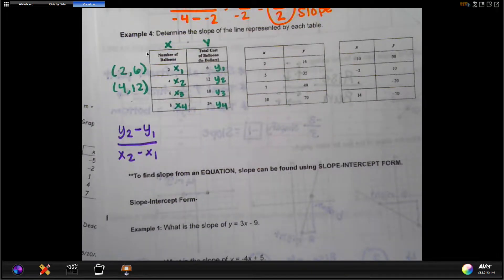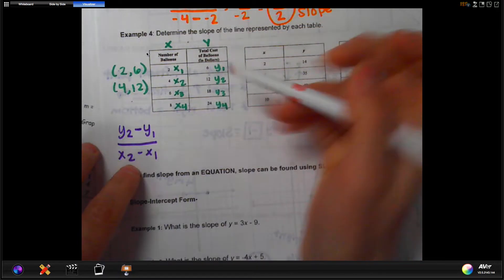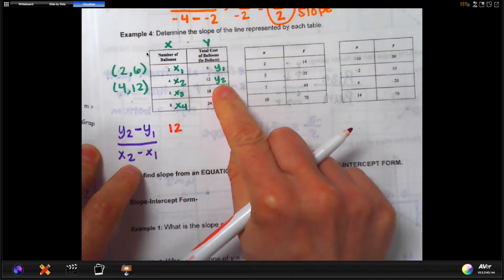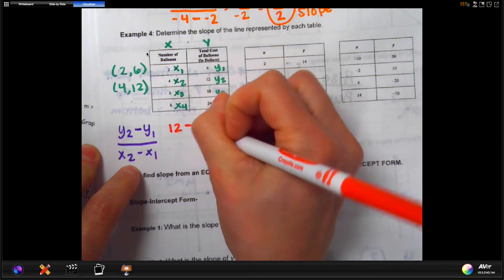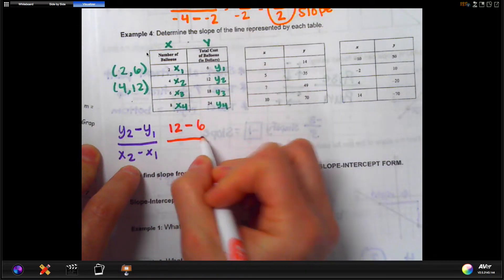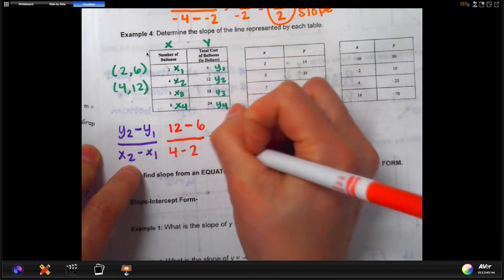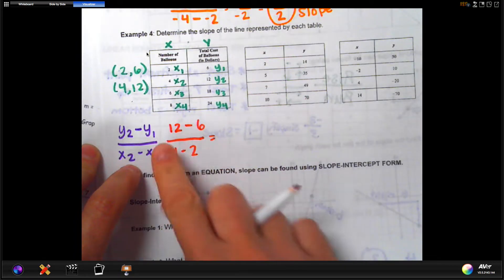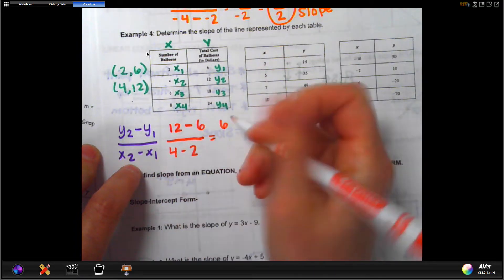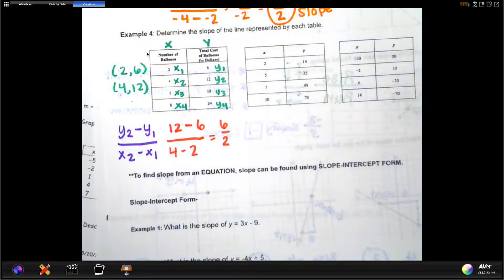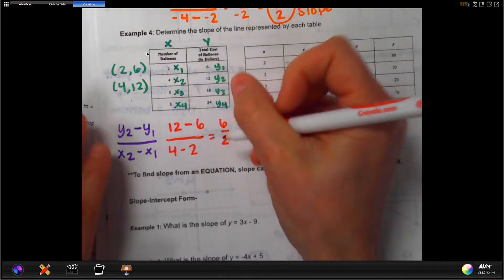Okay, so let's do it. Y2, from what we've labeled on this table, would be 12. See, it's right here. Minus y1 would be 6. And then x2 would be 4 minus x1 of 2. And then we simplify. So 12 minus 6 is 6. 4 minus 2 is 2. And then we check, can we divide that? 6 divided by 2 is 3.